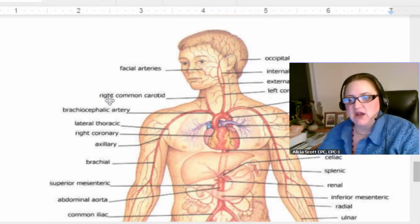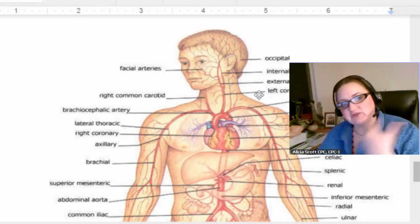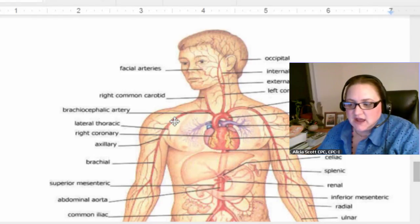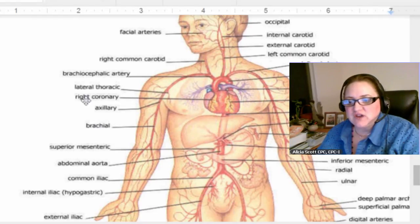Facial arteries, right common carotid, just left and right, it's bilateral. Then, this brachiocephalic is this one right here so that subclavian turns into the brachiocephalic. And then, you've got thoracic, which is for the chest, right coronary over in the heart.